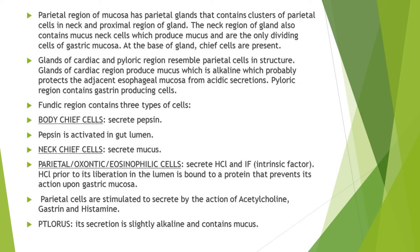The fundic region contains three types of cells. First are the body chief cells, which secrete pepsinogen; this pepsinogen is secreted into the gut lumen where it is activated to pepsin after being mixed with the hydrochloric acid of the gastric juice. Then come the neck chief cells which secrete mucus. Then there are parietal cells which secrete hydrochloric acid and intrinsic factor. This HCl prior to its liberation in the lumen is bound to a protein which prevents its action upon the gastric mucosa. These parietal cells are stimulated to secrete by the action of acetylcholine, gastrin, and histamine.